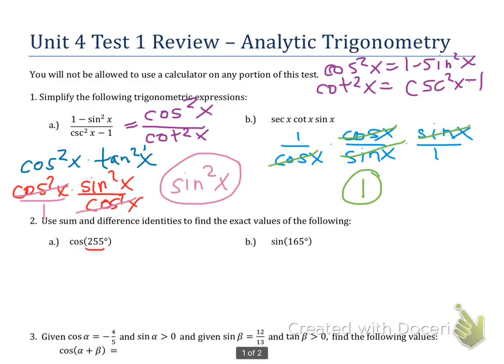So for 255, I chose to use 210 and 45 degrees. So once I've decided that, I notice I have a plus sign to add my angles. I'm going to use the sum identity for cosine.